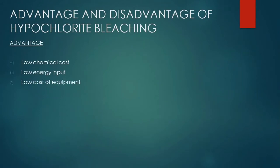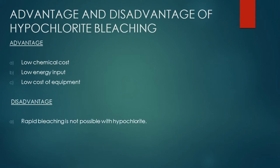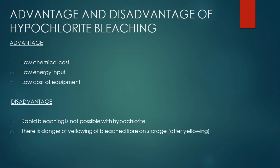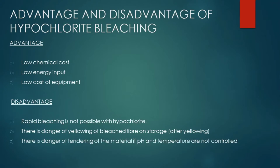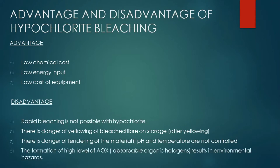The disadvantages of this process are: rapid bleaching is not possible with hypochlorite, and there is a danger of yellowing of bleached fiber on storage. There is also a danger of tendering of the material if pH and temperature are not controlled. Additionally, the formation of high levels of AOX — absorbable organic halogens — results in environmental hazards.